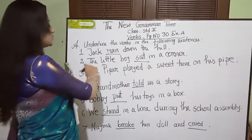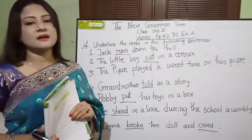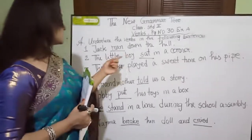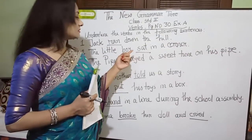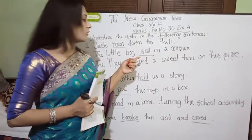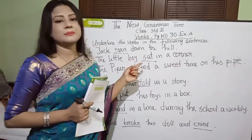Number 2: The little boy sat in a corner. Here, 'sat' is an action or doing word. That's why 'sat' is a verb.